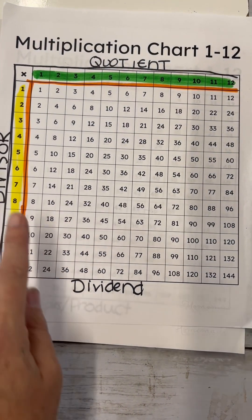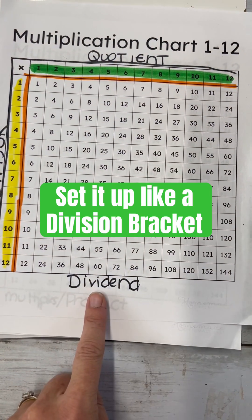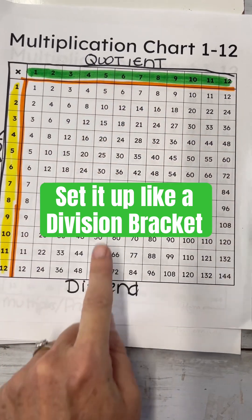Highlight the outside, that's your divisor. The numbers in the middle are your dividend and your top is your quotient.